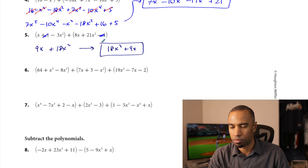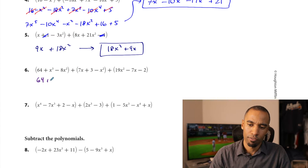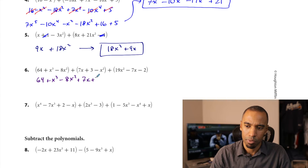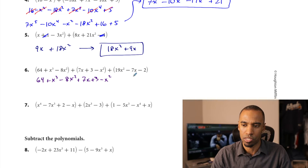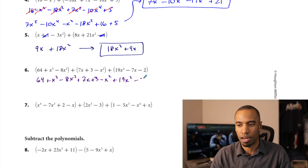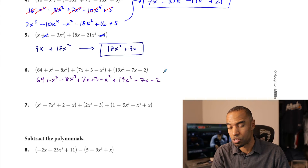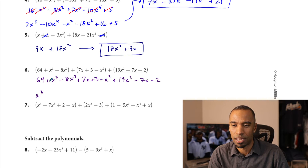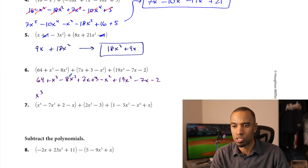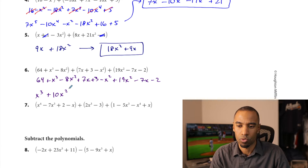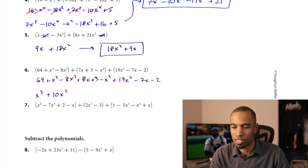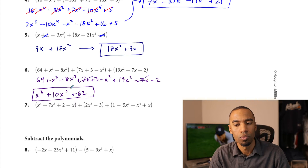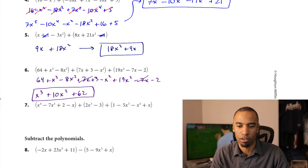Problem 5: rewriting without parentheses gives 64 plus x cubed minus 8x squared plus 7x plus 3, and then the other polynomial. The cubic is the highest and nothing combines with it. For x squareds: negative 8x² minus x² plus 19x² equals 10x squared. Then 7x minus 7x is 0 — those cancel. And 64 minus 2 gives the constant. Reading left to right and finding standard form is a solid approach.